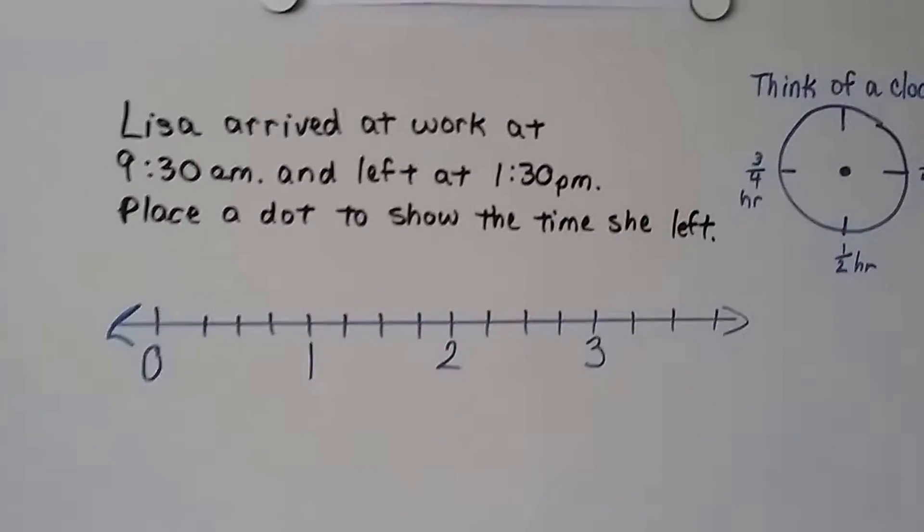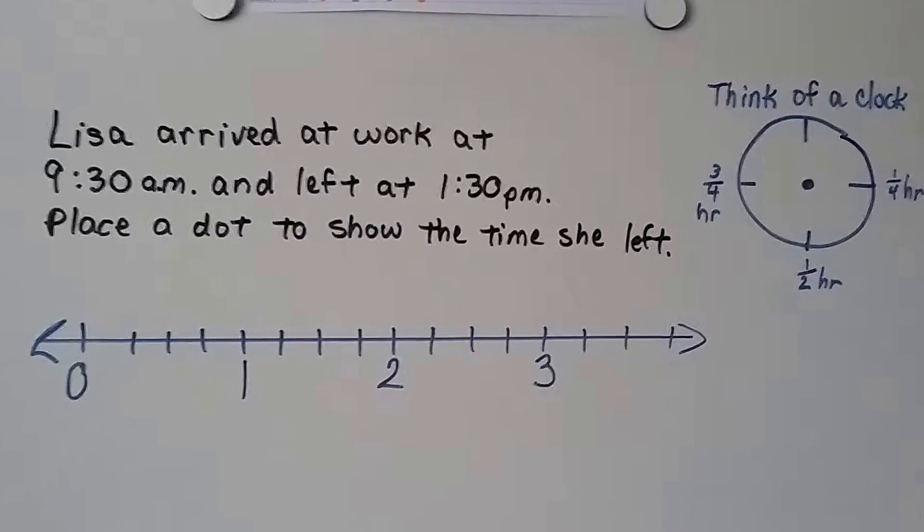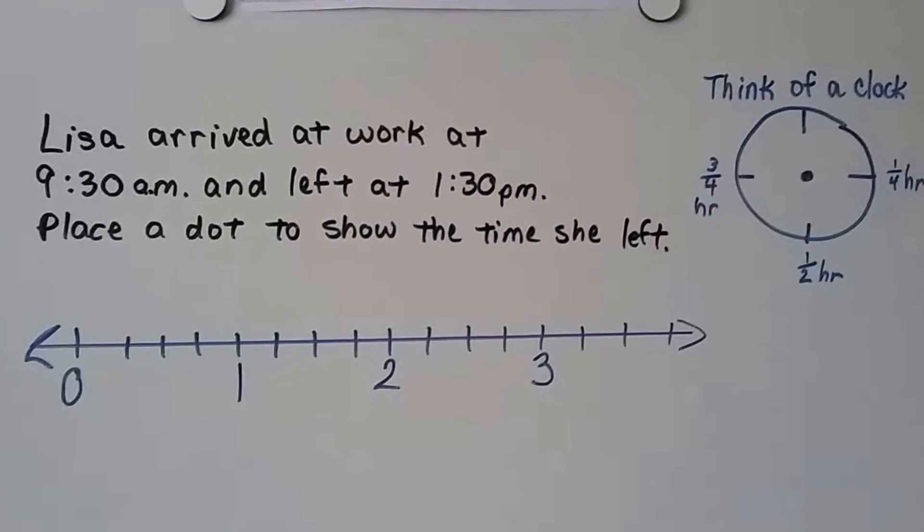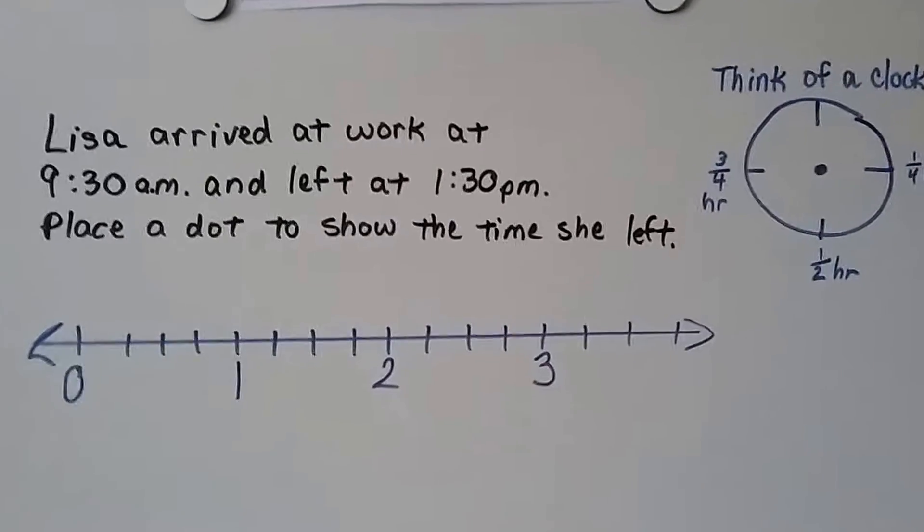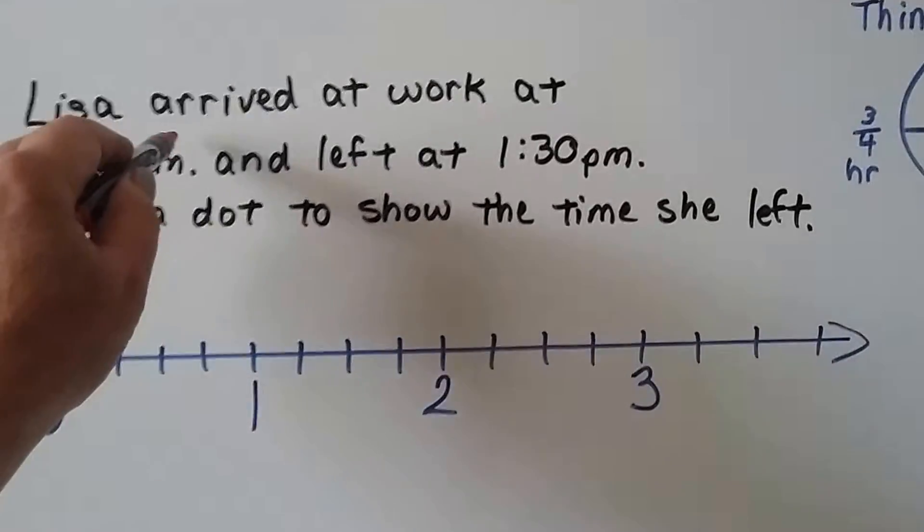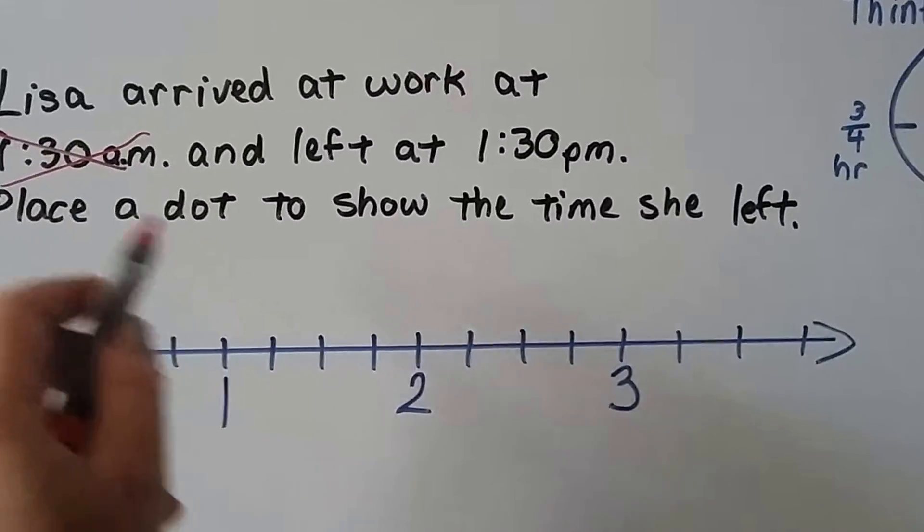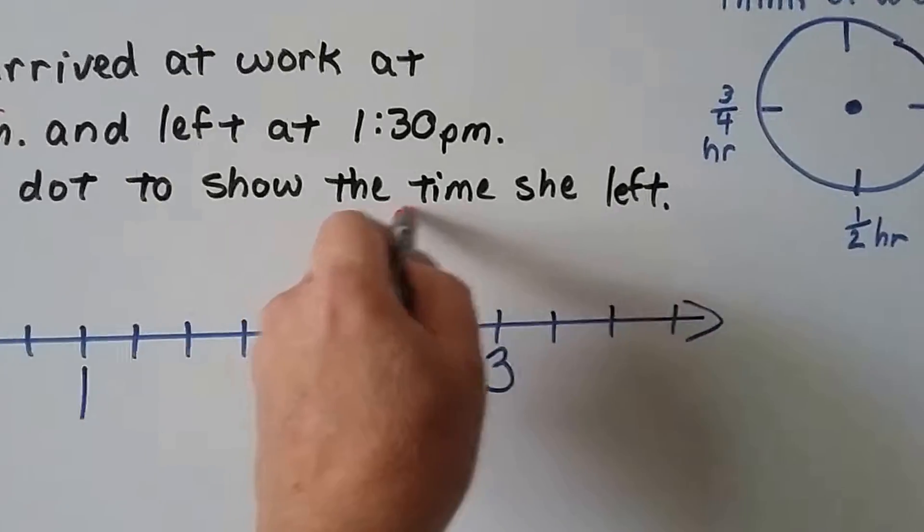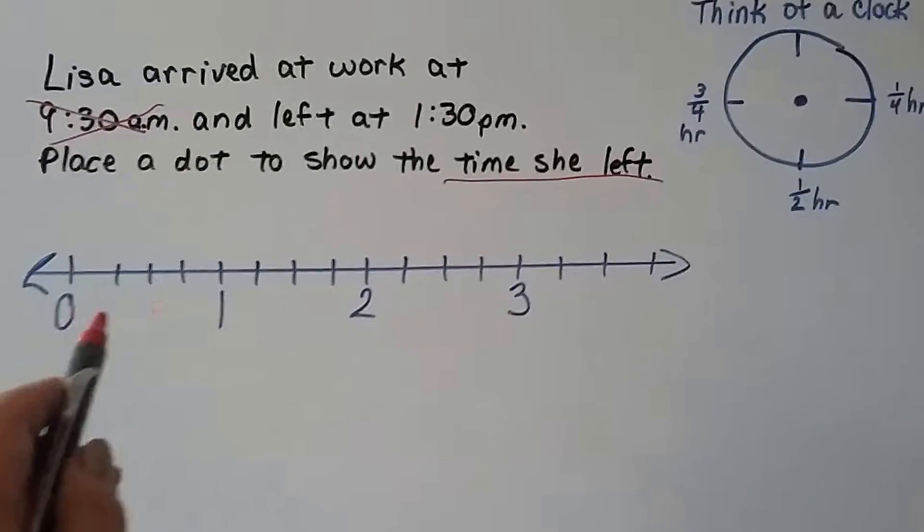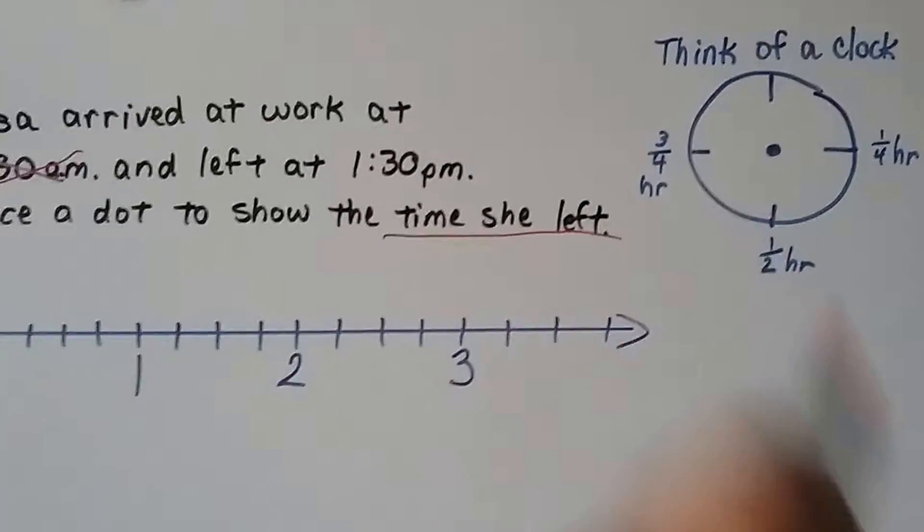Now this one's a little tricky and there's an example like this in the book that you have to do. It says Lisa arrived at work at 9:30 a.m. and left at 1:30 p.m. Well, this is tricky because that 9:30 a.m. is unnecessary information. It doesn't say how many hours she worked. It says place a dot to show the time she left, and she left at 1:30 p.m.